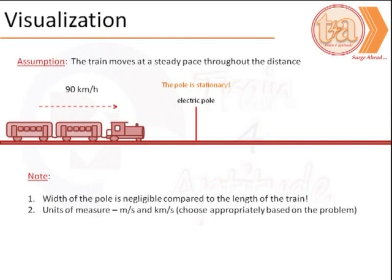What is interesting to note here is also that the unit of train speed and the time to cross the pole are not uniform. One is in km per hour and the other is in seconds. This would be the first hurdle we would need to cross. We would need to get the units into meters per second.